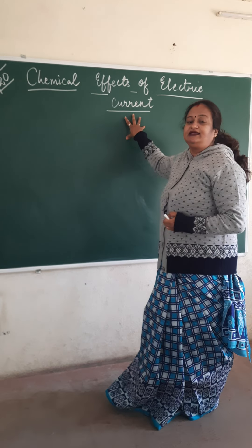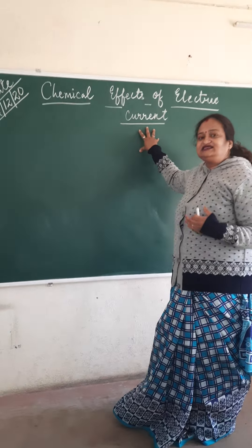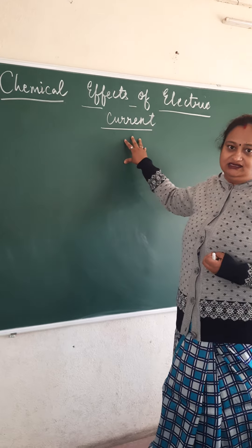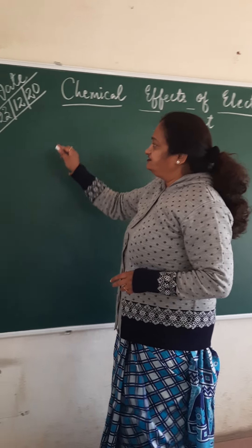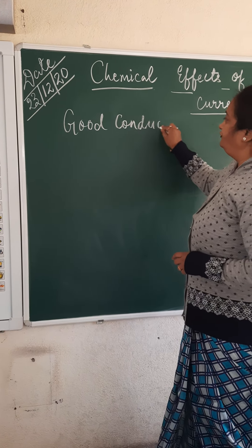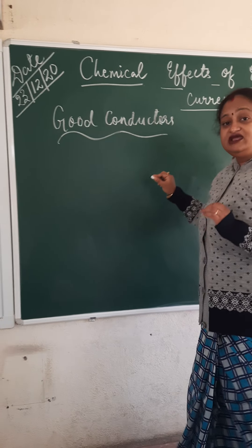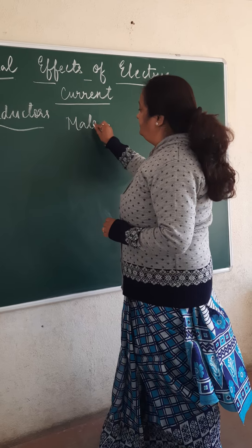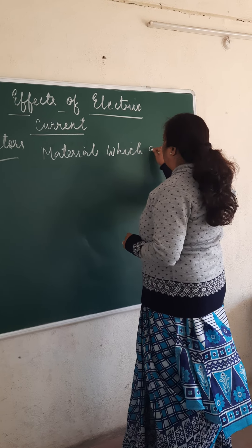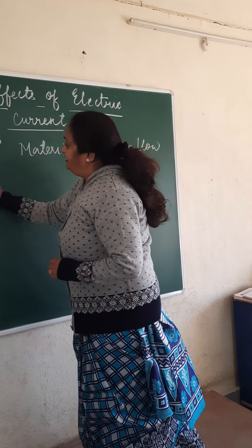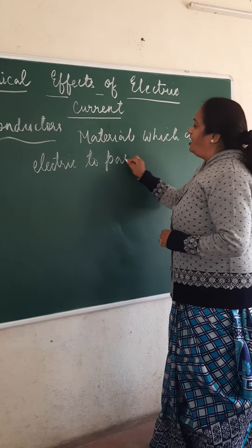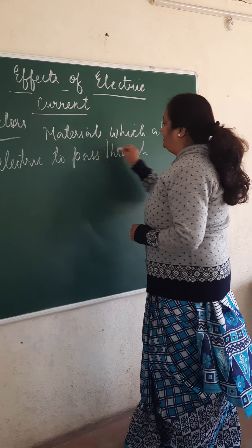Before we go through the topic of chemical effects of electric current, let us understand what you mean by good conductors and bad conductors or poor conductors. Good conductors are materials which allow electric current to pass through them.